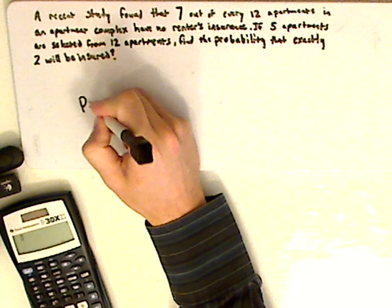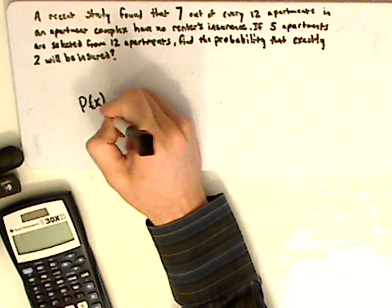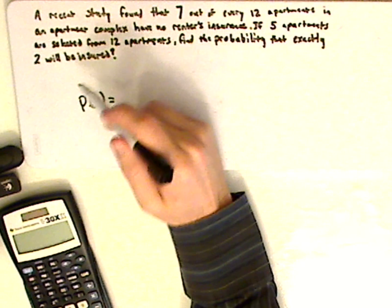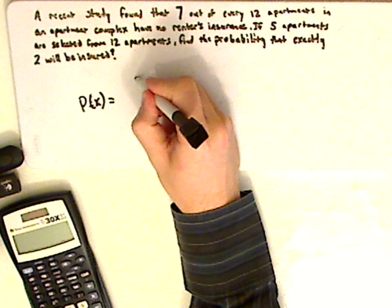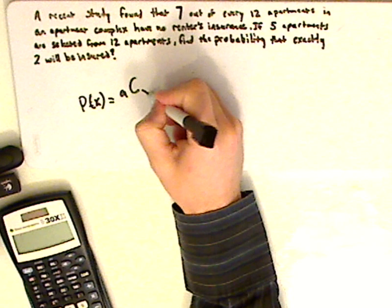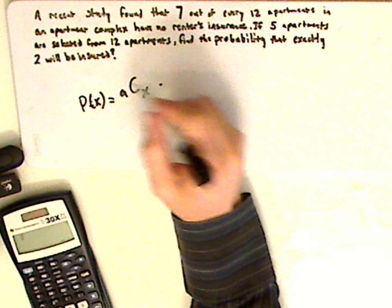It's P of X. P of X is the event that you're looking for, which is exactly 2 will be insured. So you have A and then X.